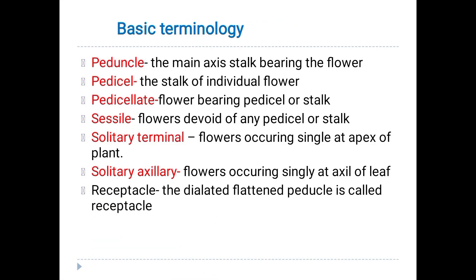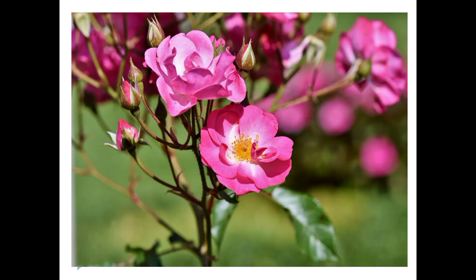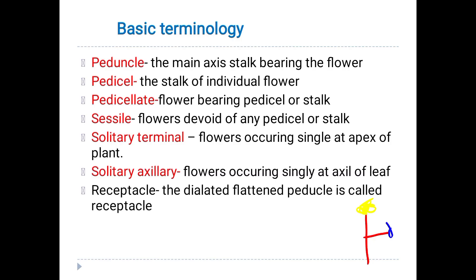So you understand what is pedicel, what is a pedicellate flower which has a pedicel, and a sessile flower which is devoid of a pedicel. When a single flower occurs at the apex of the plant, it is called a solitary terminal flower. If there is a single flower on a branch in the axil, it is called a solitary axial flower.